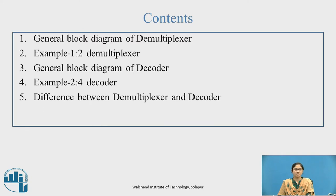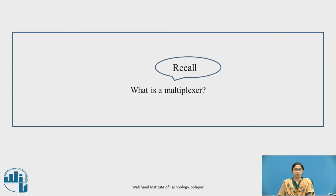Contents: First is the general block diagram of demultiplexer, with an example of a 1-to-2 demultiplexer. Then the general block diagram of decoder, with an example of a 2-to-4 decoder. Finally, the difference between demultiplexer and decoder.